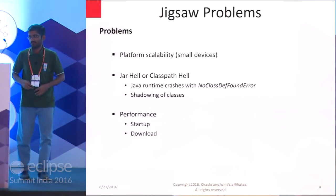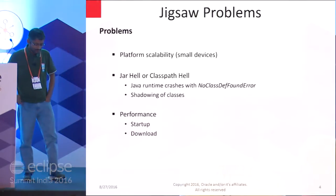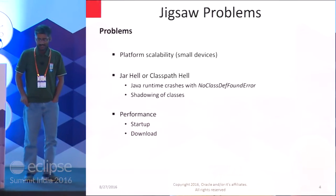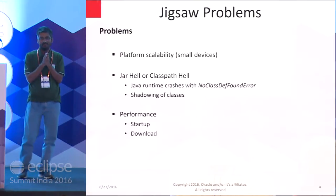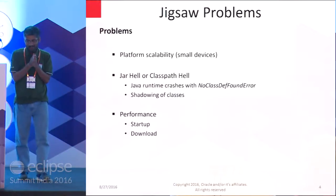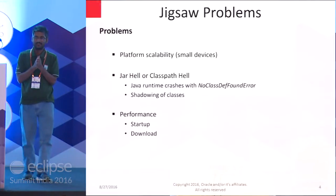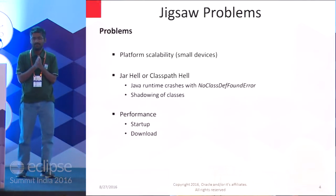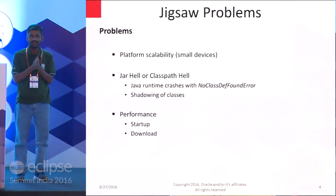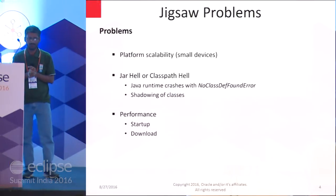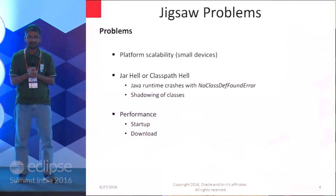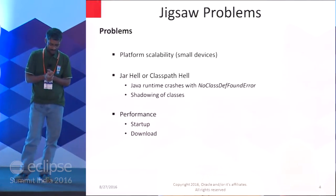Looking at existing problems: in JDK 8, the JDK had been a single monolithic image, and that had been a problem for a long time — be it embedded devices or cloud-based platforms, where space is very important. JDK 8 had a tool called JRE create for embedded JDK, but otherwise it was a single monolithic image. The class path is another issue.